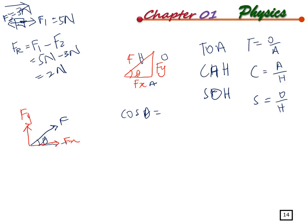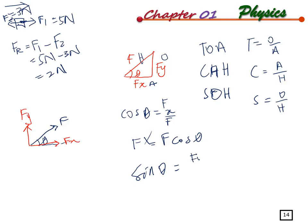Using cosine: cos theta equals adjacent over hypotenuse, so cos theta equals Fx over F, which gives Fx equals F cos theta. Using sine: sin theta equals opposite over hypotenuse, so sin theta equals Fy over F, which gives Fy equals F sin theta. This is how the standard component equations are derived.